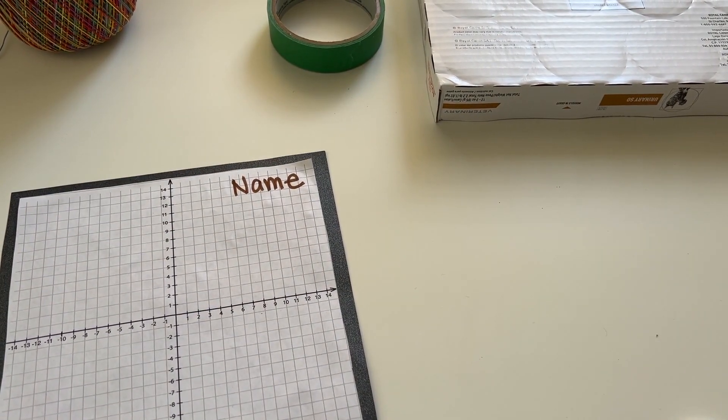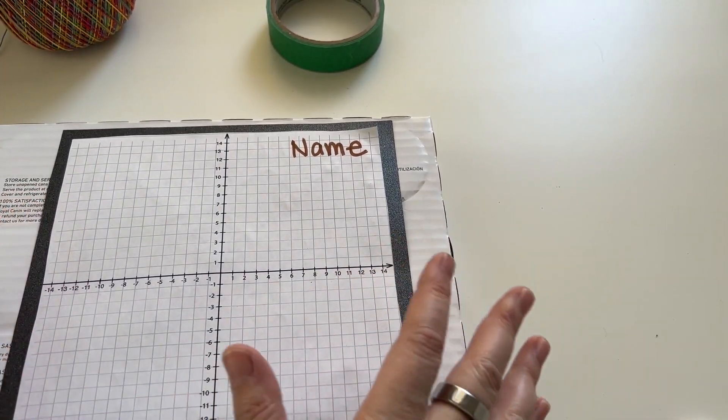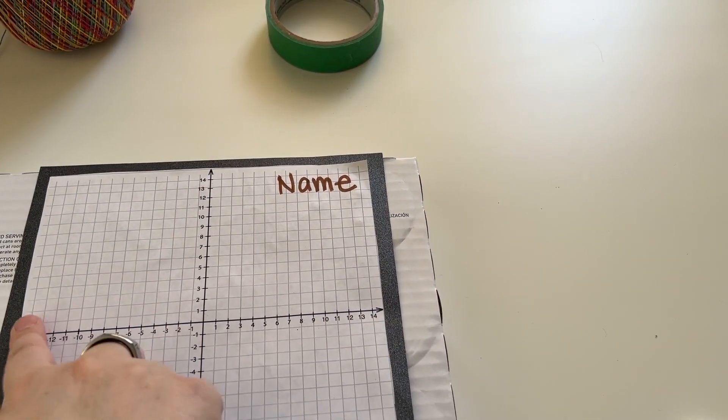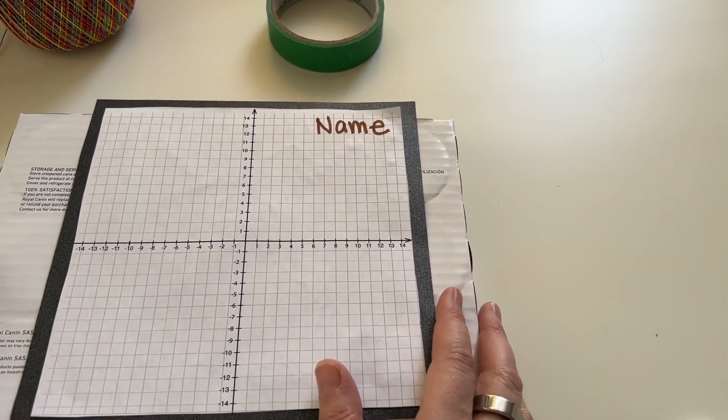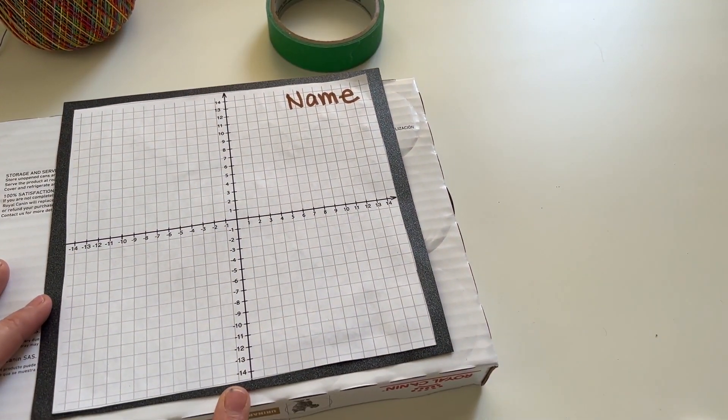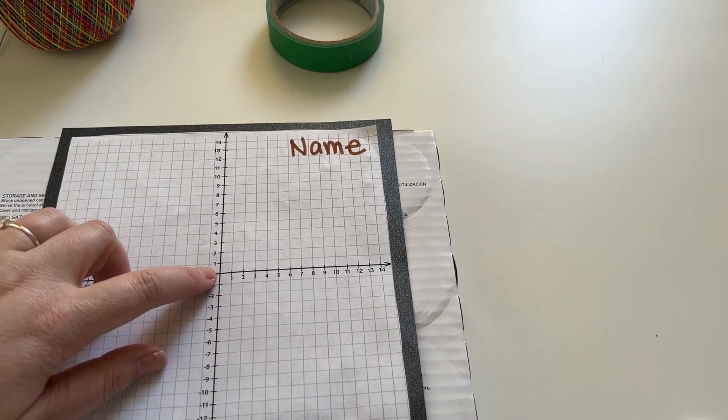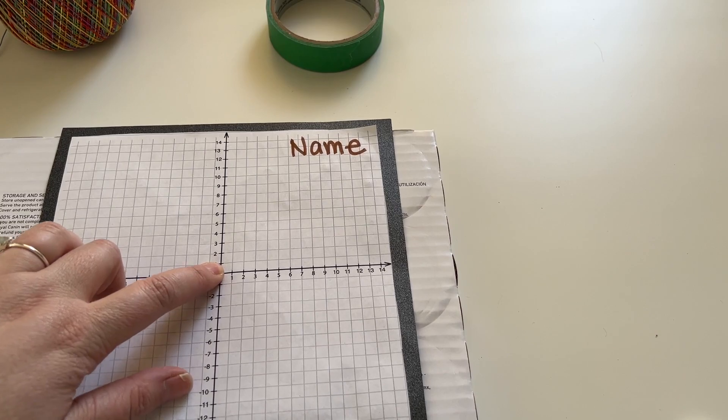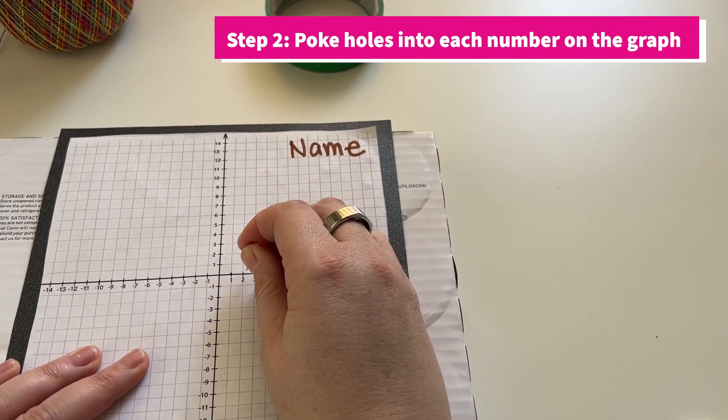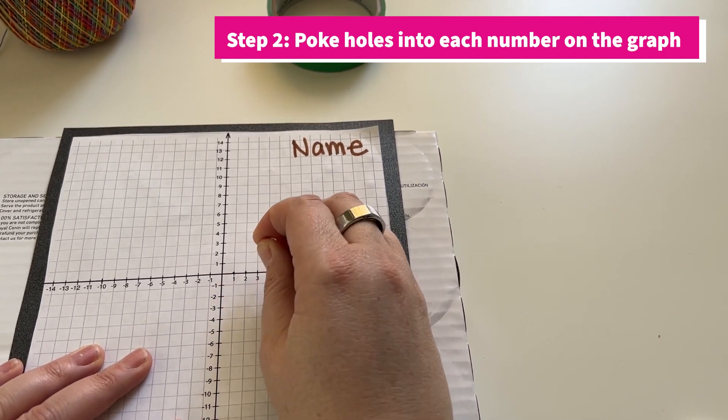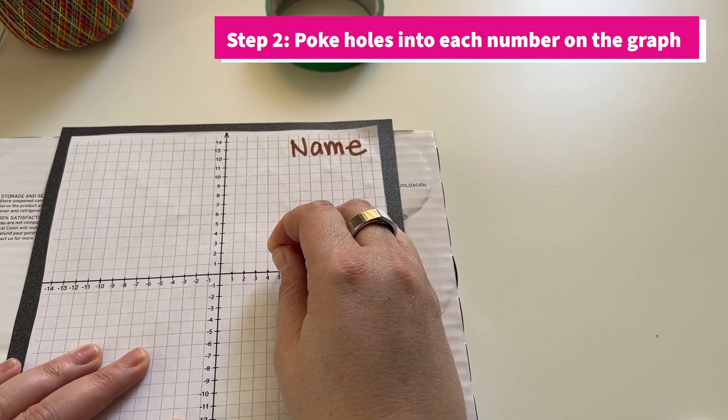In this next part we are going to poke holes in all of our spots. I'm going to use just a piece of cardboard so that I can push through without hurting myself. We are not going to work in zero, we're going to just start at each edge coordinate here, the dots on the x-axis and y-axis.